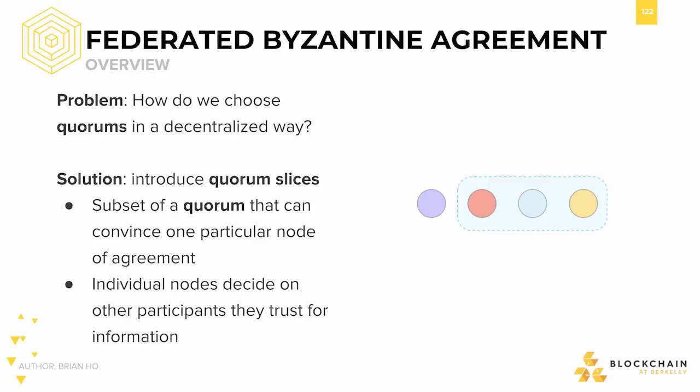A quorum slice is a subset of a quorum that can convince a particular node — aka you — of agreement. Individual nodes can decide who to include within their quorum slice.